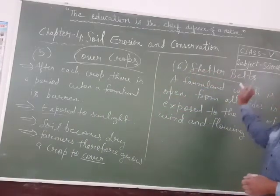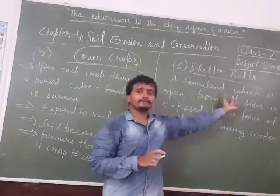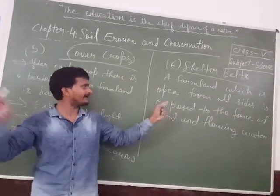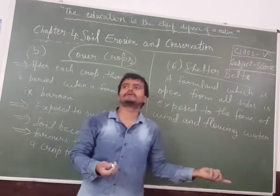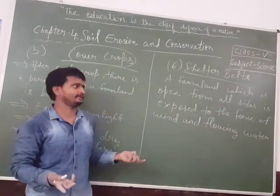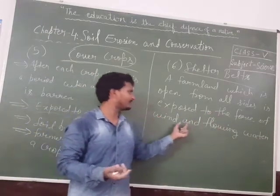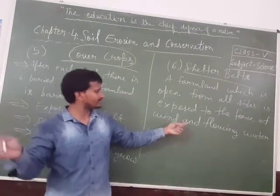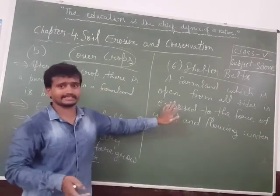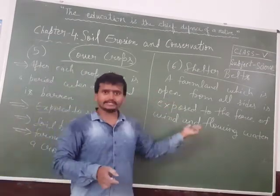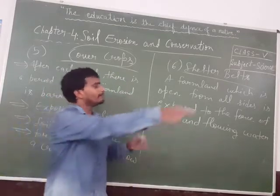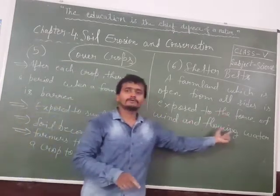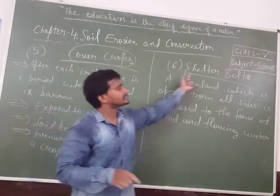The last method is shelter belts. A farmland open from all sides is exposed to the force of wind and flowing water, which can easily remove the soil. So farmers grow trees, shrubs and grasses on the boundaries of the farmland to reduce the force of wind and flowing water and protect the soil. This is known as shelter belts. Thank you.